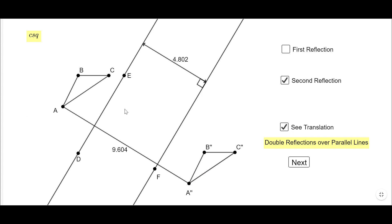If I slide this triangle A-B-C, and you see here 9.604 units in this direction, I'm going to be on top of this triangle.